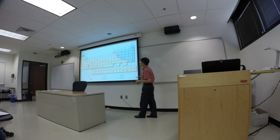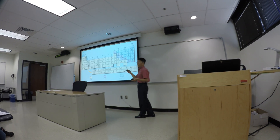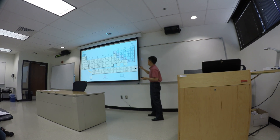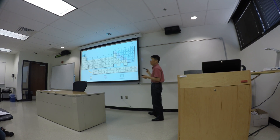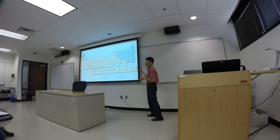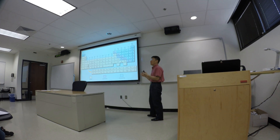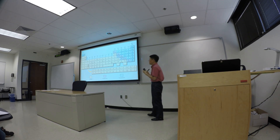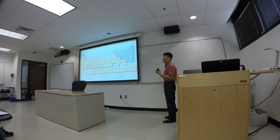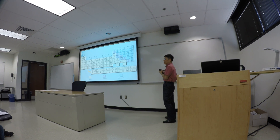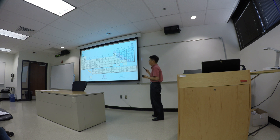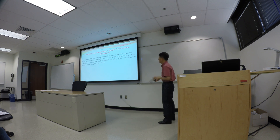Looking at chlorine — chlorine-35 and chlorine-37 — on the periodic table, the atomic mass given is 35.4527. How do we arrive at this number? It's the atomic mass of chlorine-35 times 75.77%, plus the atomic mass of chlorine-37 times 24.23%. But you must convert the percentage into a decimal: 75.77% becomes 0.7577. That's how we do the calculation.